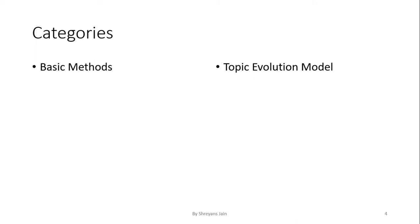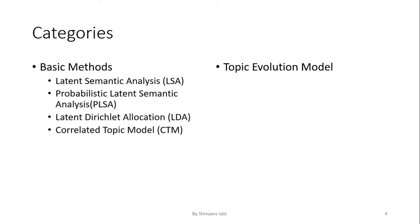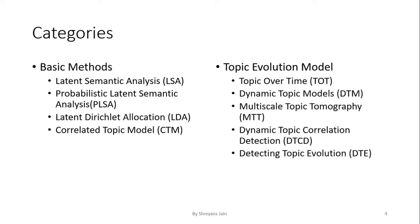Now let's talk about categories in topic modeling. There are two basic categories: the first is basic methods, and the second is the topic evolution model. In basic methods, there are four methods: Latent Semantic Analysis (LSA), Latent Dirichlet Allocation (LDA), and Correlated Topic Model (CTM). In the topic evolution model, there are five methods: Topic Over Time (TOT), Dynamic Topic Models (DTM), Multi-Scale Topic Tomography (MTT), Dynamic Topic Correlation Detection (DTCD), and Detecting Topic Evolution (DTE).